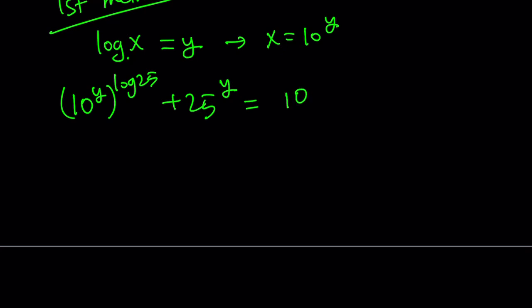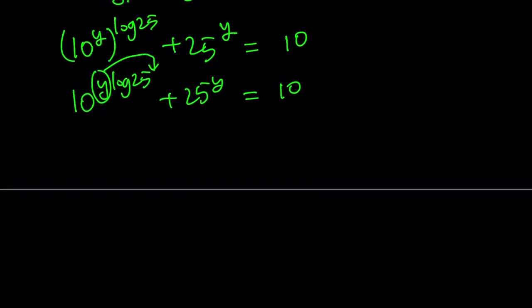And does that mean anything? We have a power of 10, we have a power of 25. Interesting. So we're going to multiply these, and then we're going to move this and make it an exponent. So let's write it as 10 to the power log 25 to the power y, plus 25 to the power y, equals 10.